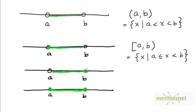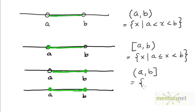The third interval here includes the right endpoint but excludes the left endpoint. So we denote it as A, B with a round bracket on the left endpoint to indicate that it's excluded and a square bracket on the right side to indicate that the right endpoint is included. This is the set of points X such that X is greater than A and less than or equal to B.